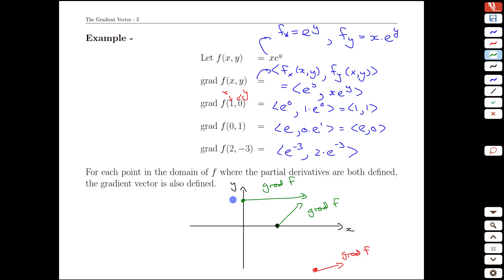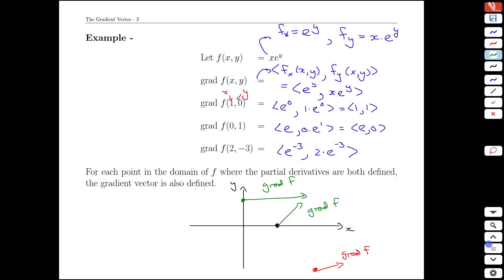So if we wanted to, we could cover this whole plane with dots and the arrows that come out of them with the arrows being computed by this gradient calculation. So far, so what, let's investigate further in subsequent videos.